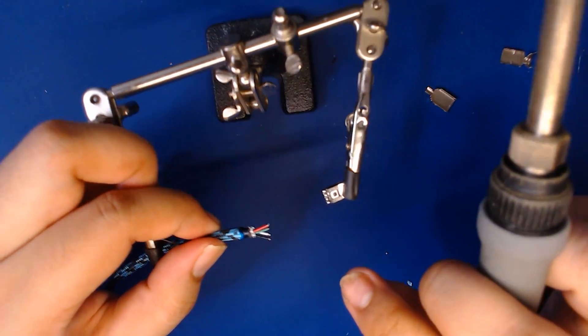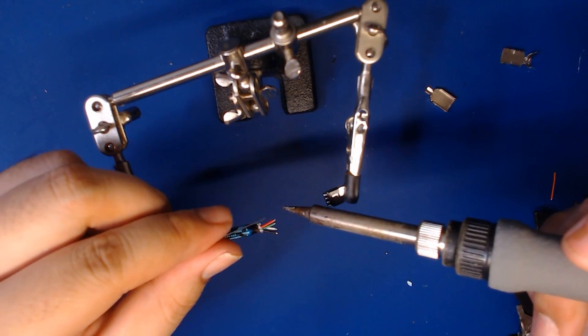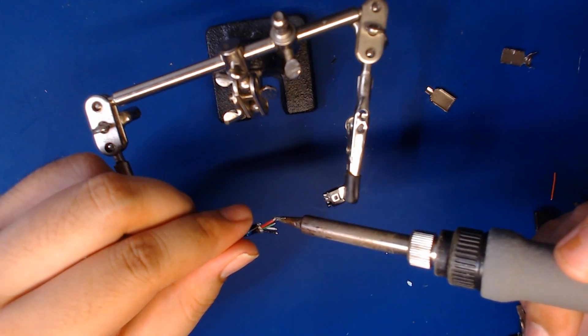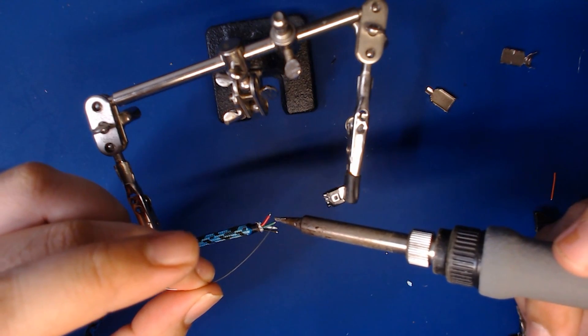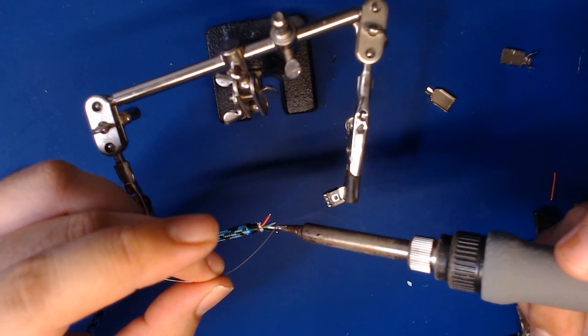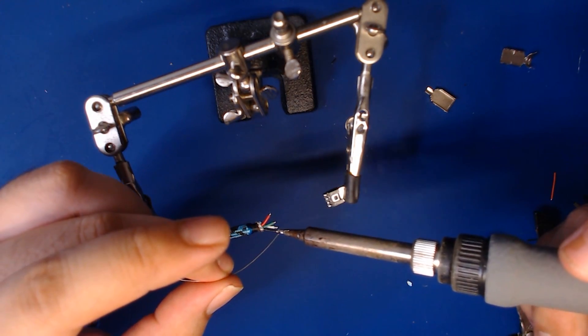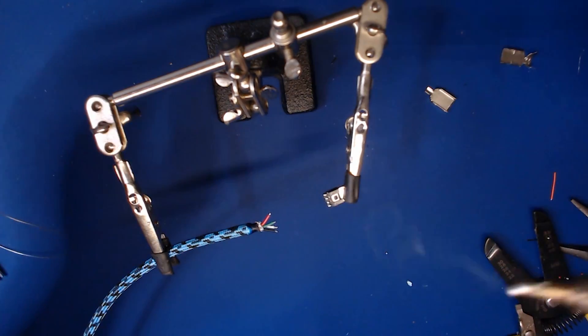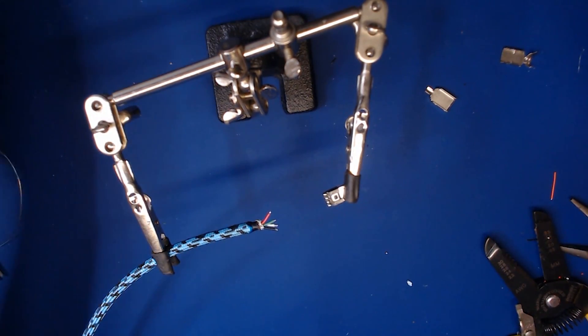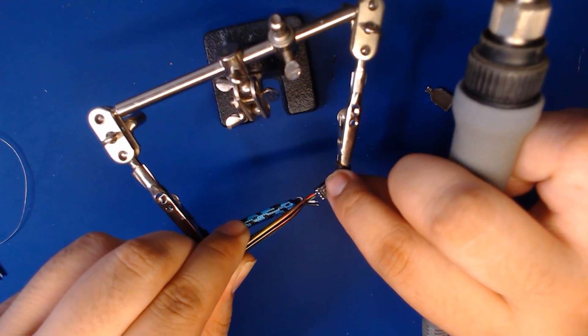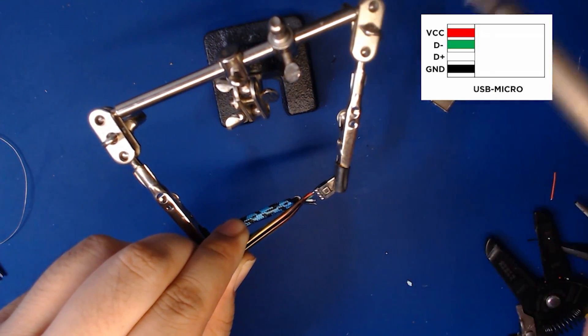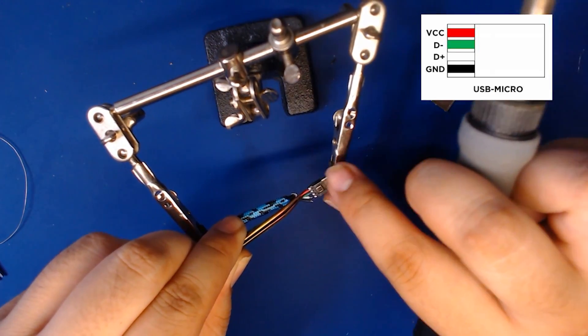So again, similar to the USB-C connector, I went ahead and tinned my contact points on the micro connector here, and I'm going to go ahead and tin the exposed wires on my cable. After doing this, I can solder the connection together. I'm always constantly adjusting the connector as well as the wire as I solder any connection. Really take your time and you'll find out what works for you as you solder.